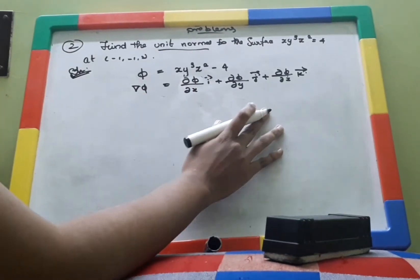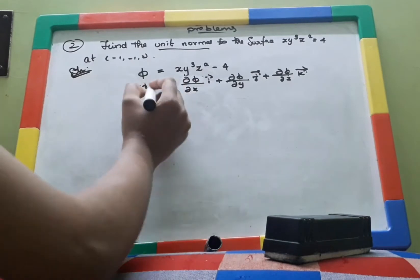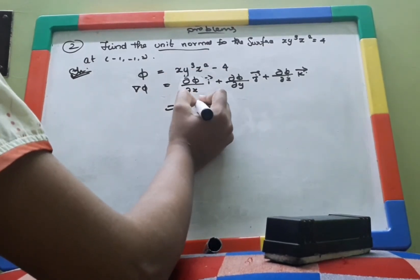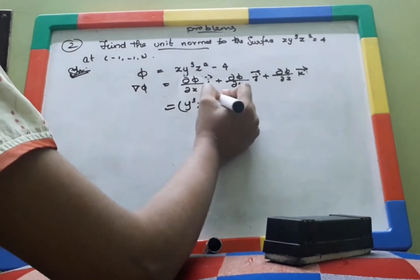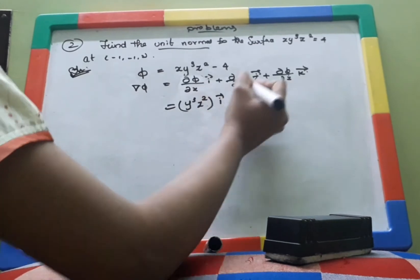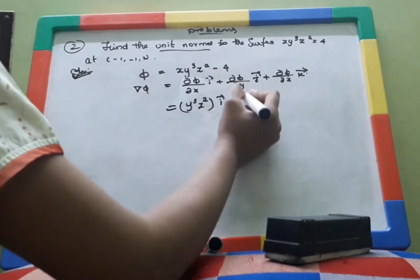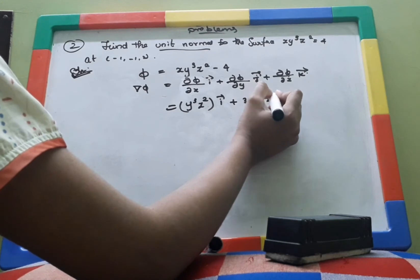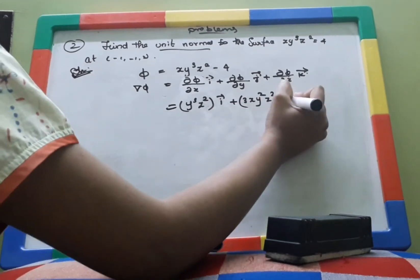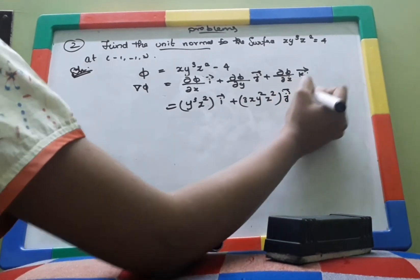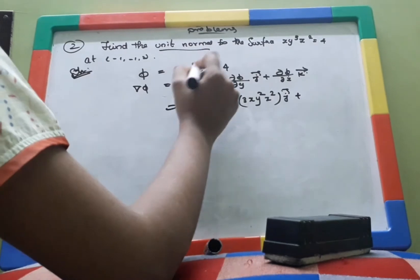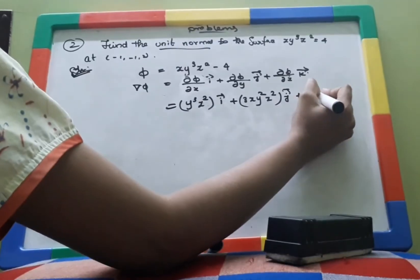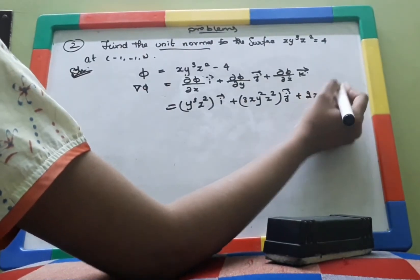Now we are going to differentiate the given surface. Differentiating ψ with respect to x, y, and z gives us the components in the î, ĵ, and k̂ directions respectively.